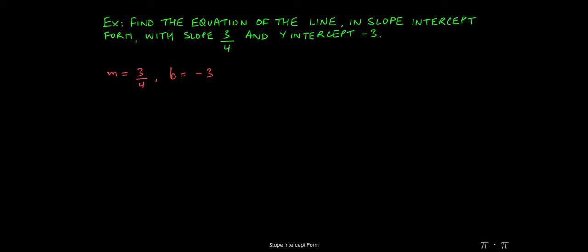This is one of the easiest examples you're going to see all semester, because we can just plug and chug. We know that the equation of the line in slope-intercept form is y equals mx plus b. So if we already know the constants for m and b, all we have to do is replace those two letters with the constants that we have. So the equation becomes y equals 3 over 4x minus 3. And that's it.